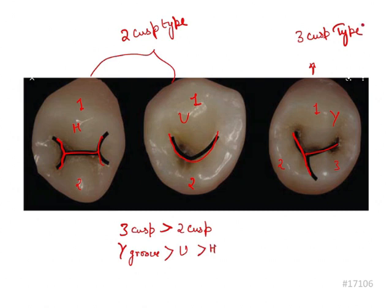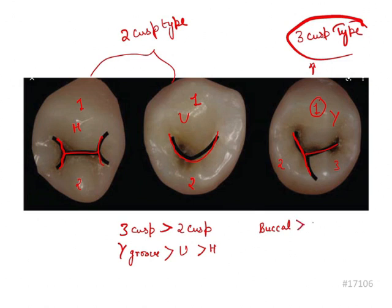Another important point about the three-cusp type: the buccal cusp is quite large. If we consider the size of the cusps, the order is buccal first, then mesolingual, and then distolingual. These are key details regarding the mandibular second premolar that are generally asked in exams.